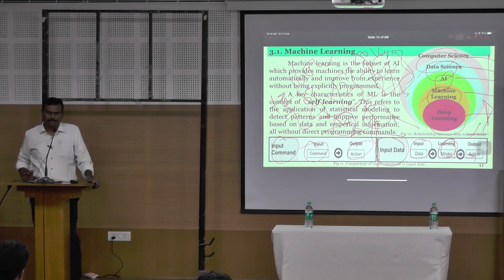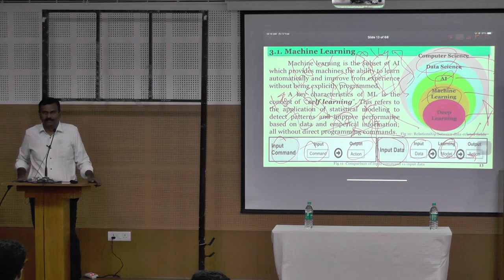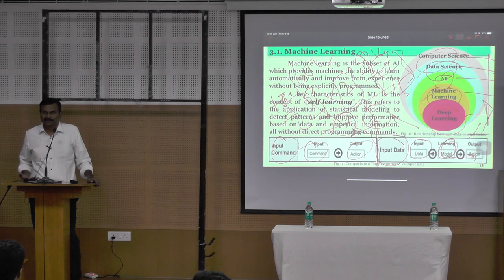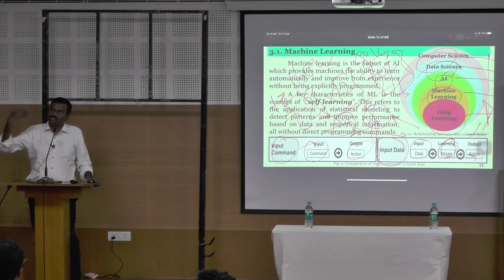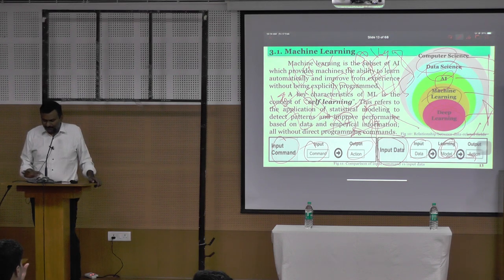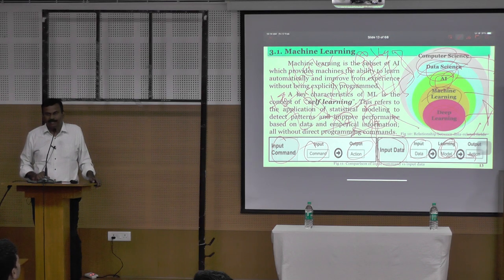Application of ML is plenty. For example, you may be a design signal engineer — to design the signal, you have data on how many vehicles cross a particular point per hour or per minute. So you can analyze previous data and forecasting data. After 20 years, what is the width of the road needed, what signal timing to follow — everything you can plan using data science, artificial intelligence, machine learning, and deep learning.